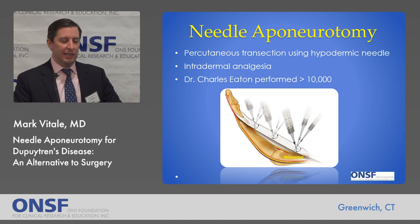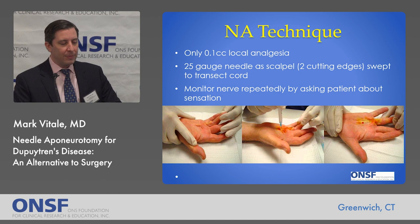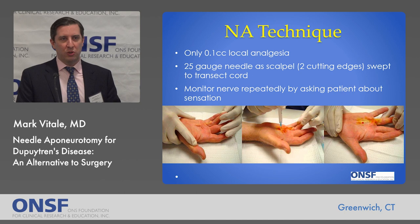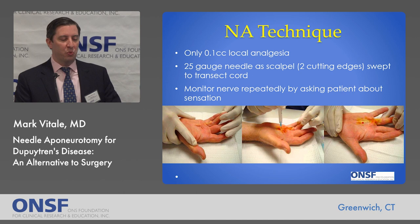For instance, now retired Dr. Charles Eaton performed 10,000 of these procedures, and many people would fly to see him in Jupiter, Florida to have a needle aponeurotomy done. The technique uses small amounts of 0.1 to 0.5 cc's of local 1% lidocaine into the skin. The 25-gauge needle is used as a scalpel — it has two cutting edges — and you puncture and sweep the needle through the cord to transect it partially at multiple levels to weaken it. Because the numbing medicine is only into the skin, that allows us to monitor sensation of the finger and ensure we're not getting too close to the digital nerves, which often wrap around these cords.